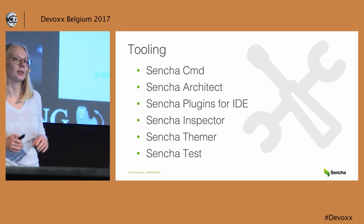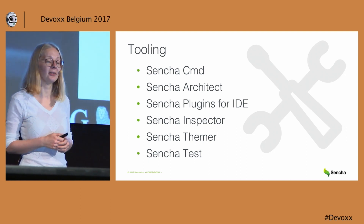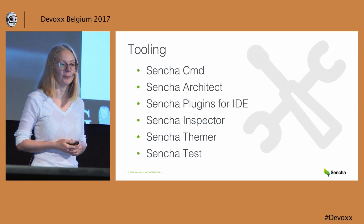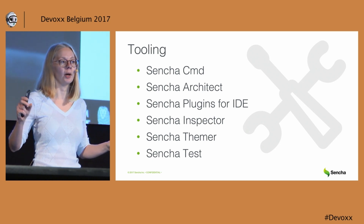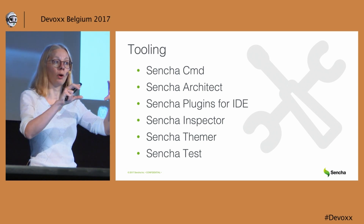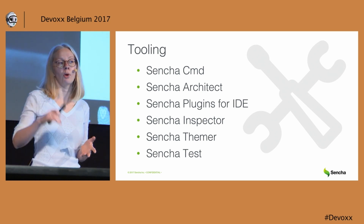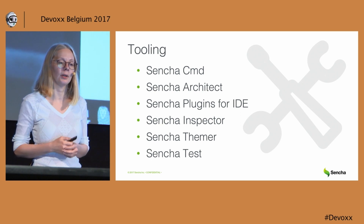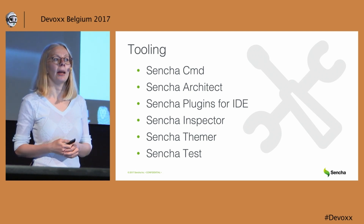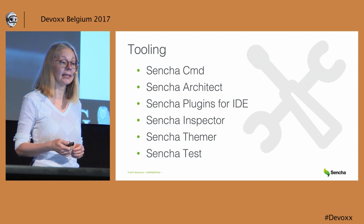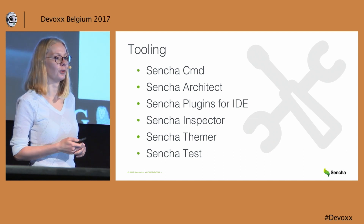Ext.js is not just a framework — it's also the tooling around it that can help you increase development productivity and improve application quality. Sencha Cmd can help you build and minimize your application. Sencha Architect lets you build your application using drag and drop of components on a canvas and configuring them. Plugins for different IDEs help you with code generation, auto-completion, and refactoring. Sencha Inspector lets you inspect and debug your application. Sencha Themer makes theming strictly easy. And last but not least, Sencha Test can help you write unit and end-to-end tests.